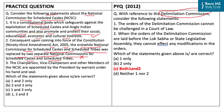The third statement says that the Chairperson, Vice Chairperson, and other members of the National Commission for Scheduled Castes are appointed by the President by warrant under his hand and seal. This statement is correct, as per Article 338, Clause 3. The question asks which statements are correct — statements 1 and 3 are correct, so the correct answer is option C — 1 and 3 only.